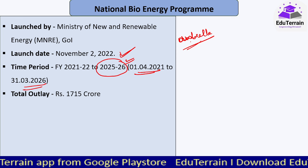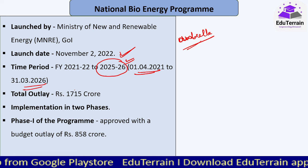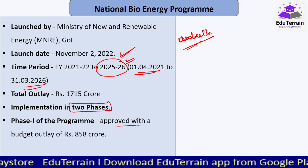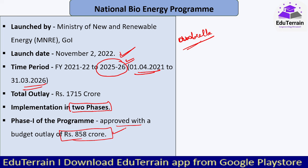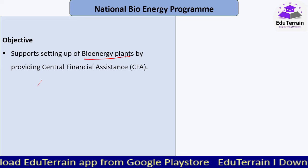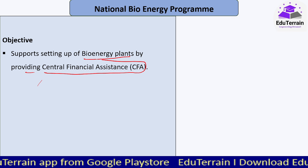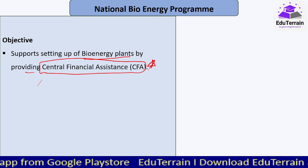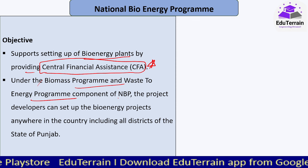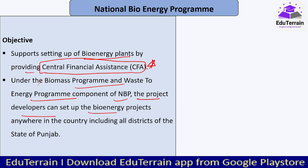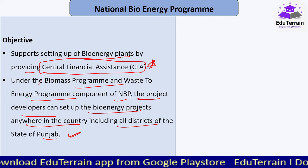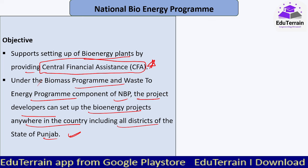This has been done with a total outlay of 1,715 crores and will be implemented in two phases. The first phase has already been started and approved with a budgetary outlay of 858 crores. The objective is to support setting up of bioenergy plants by providing central financial assistance under the biomass program and waste to energy program components, allowing project developers to set up bioenergy projects anywhere in the country.